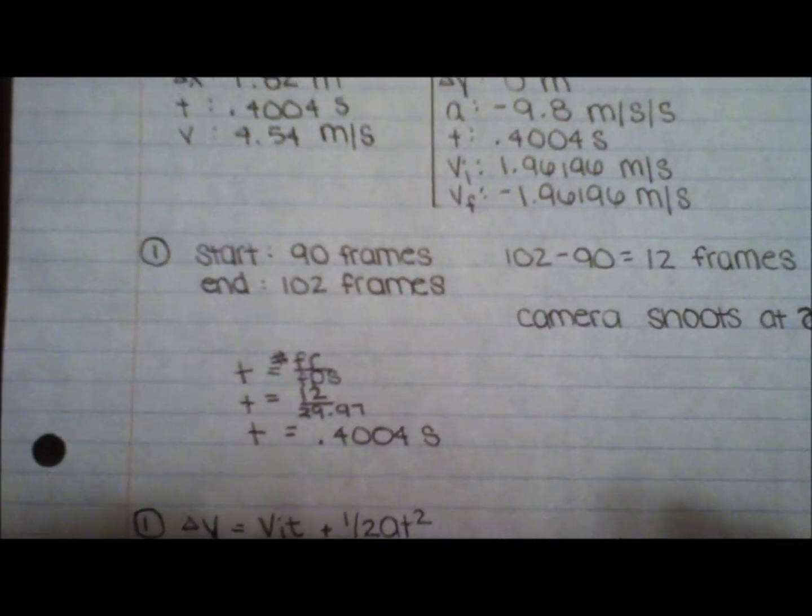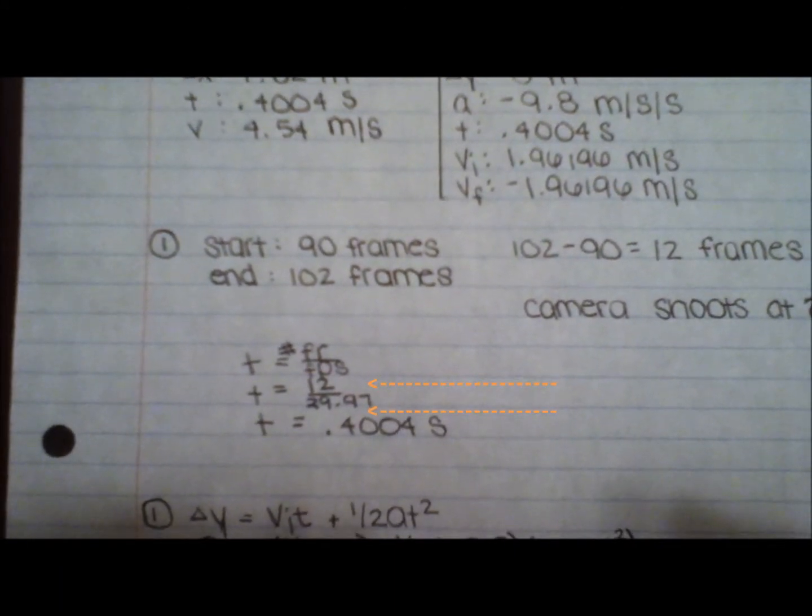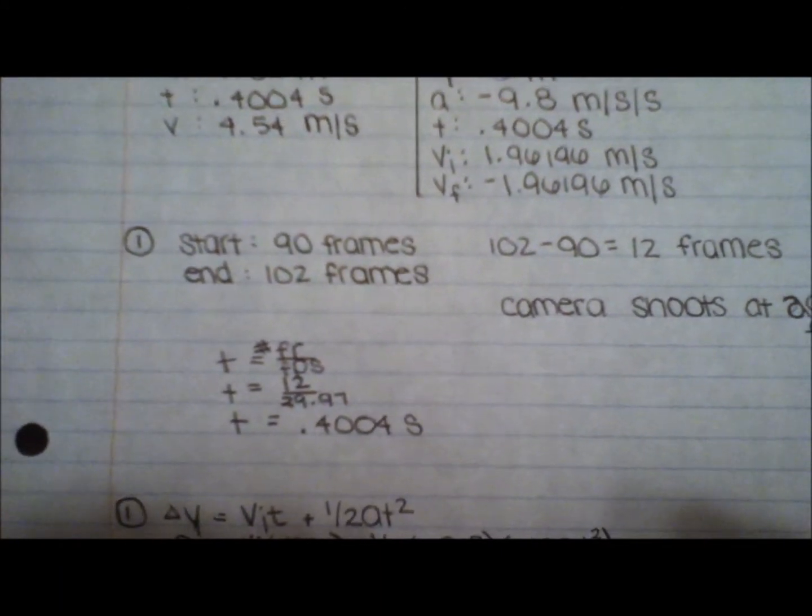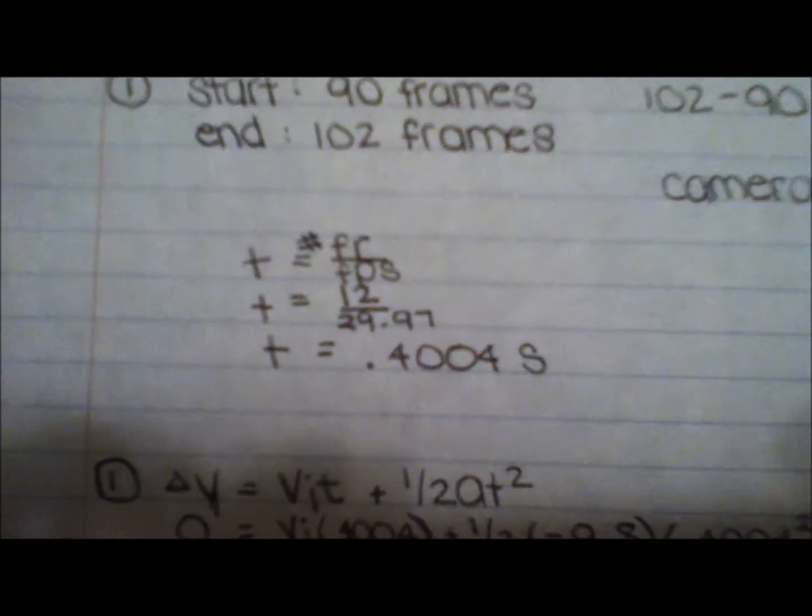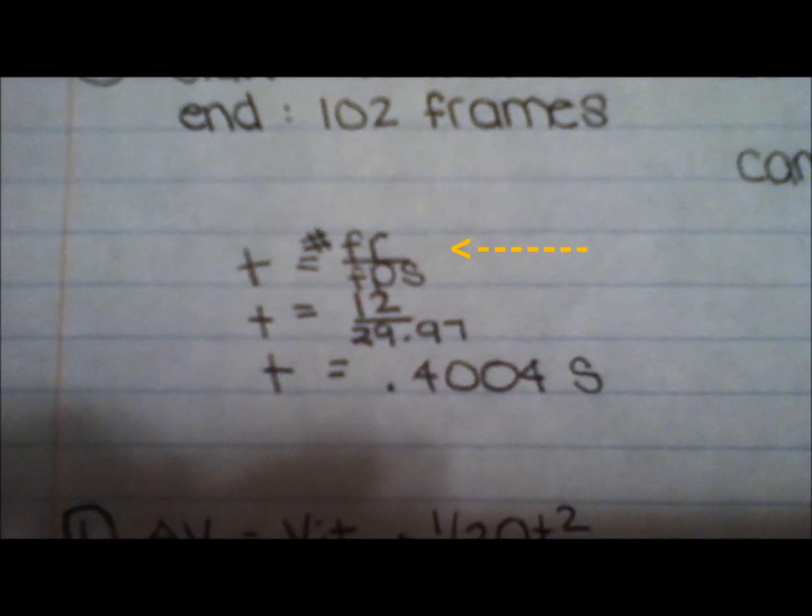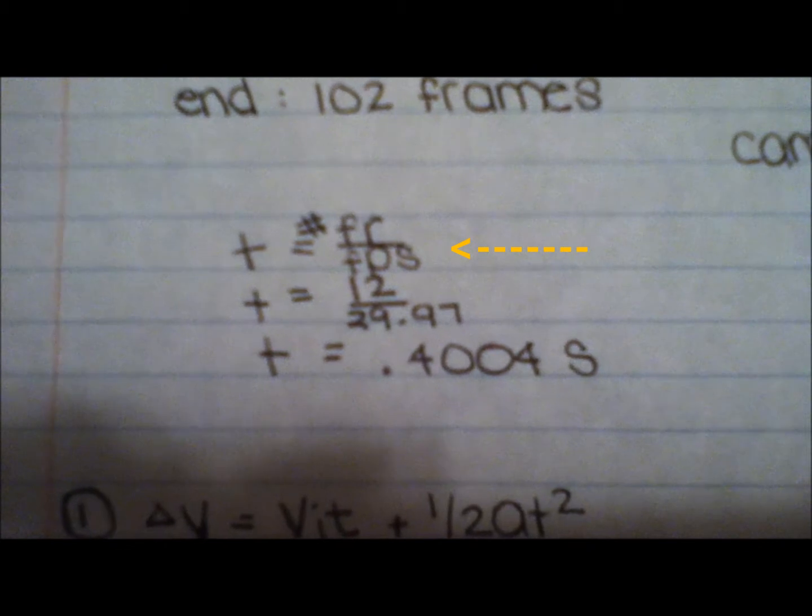To find her time, we have counted the number of frames to jump a certain and the frame rate of the camera the video is filmed on. This information is then plugged into the equation t equals number of frames over frame rate.